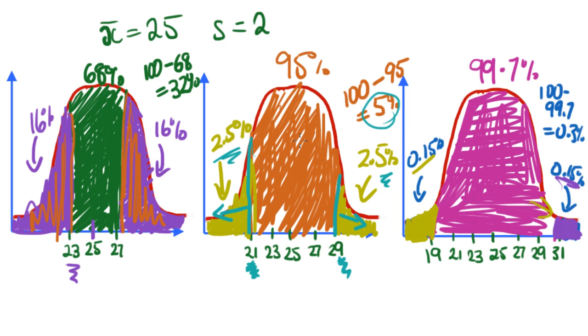And lastly, if the question asks you what percentage of data lies above 25, where does 25 sit on our graph? It's the mean. It's right in the middle. So that's this line here. So if the question is asking you what percentage of data lies above 25, they want to know this whole half of it here, this blue section. So how do we work that out?